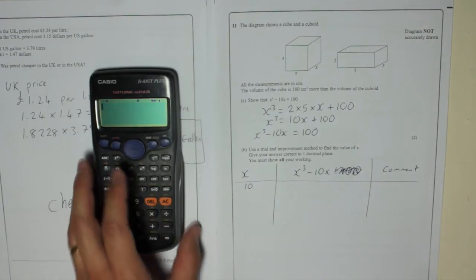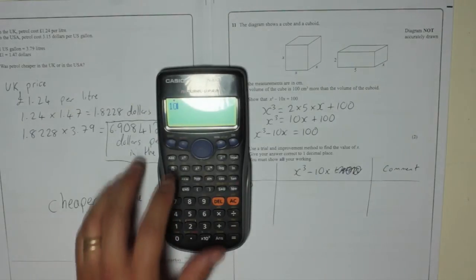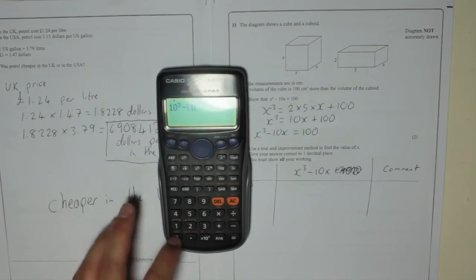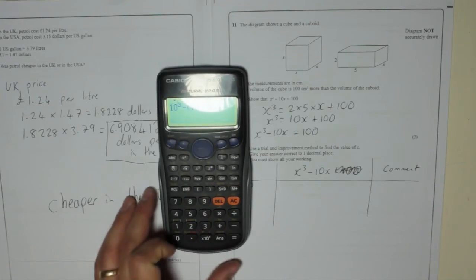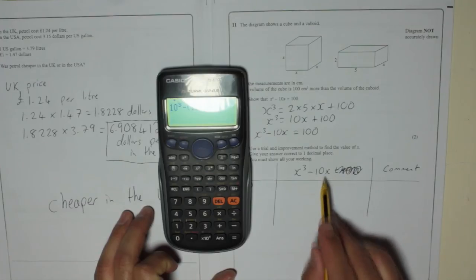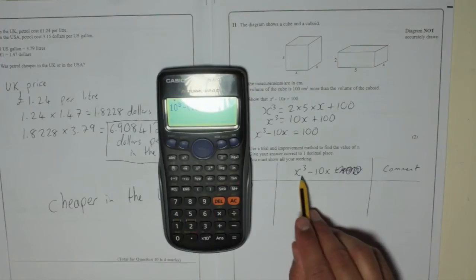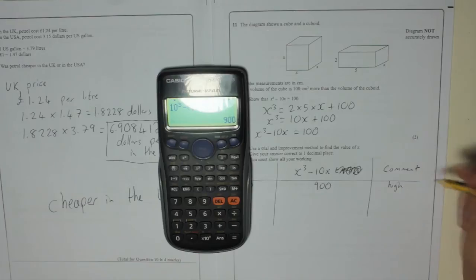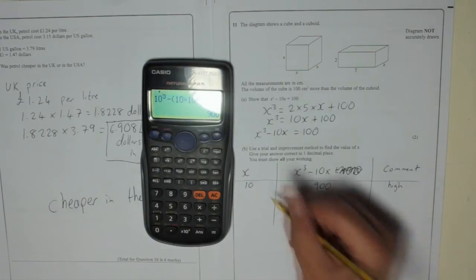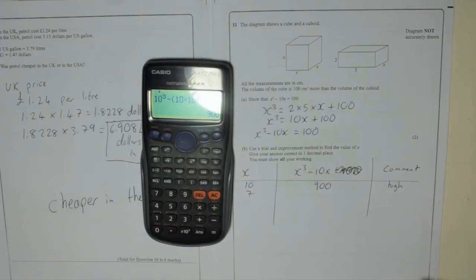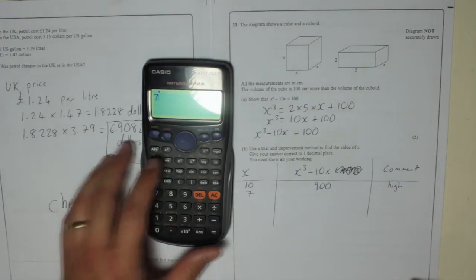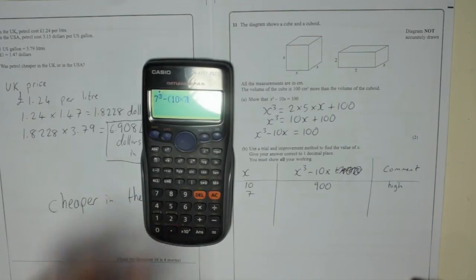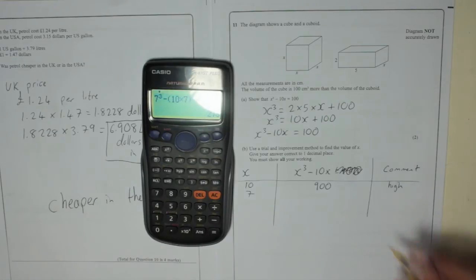So if X is 10, we want 10 cubed minus 10 times 10. Because it's 10X. And we're saying that X is 10. So 10 cubed minus 10 times 10 is 900. Too high. So I'll try 7. So that would be 7 cubed minus 10 times 7. X is 7 this time. And I get 273.